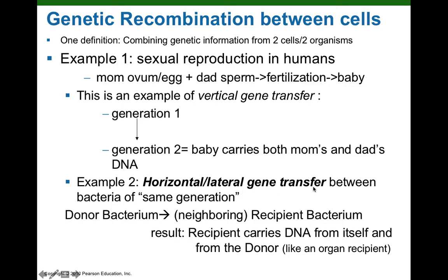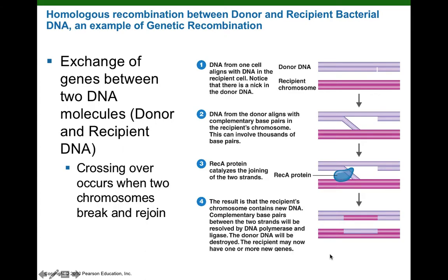Bacteria can also perform genetic recombination, but in their case it's horizontal or lateral gene transfer between bacteria of the same generation — maybe living in the same neighborhood, like your intestine. Using donation terminology, the donor bacterium supplies donor DNA, which is transferred to a neighboring recipient bacterium. As a consequence, the recipient carries DNA from itself and from the donor, making it a recombinant — just like a liver transplant recipient would be carrying genetic material from two different sources.